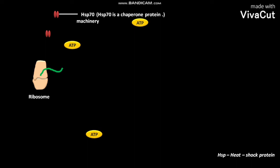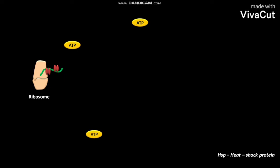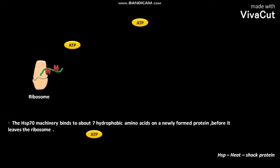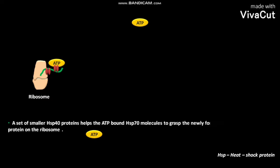The Hsp-70 machinery then binds to the newly formed protein from the ribosome. The Hsp-70 machinery binds to about 7 hydrophobic amino acids on the newly formed protein before it leaves the ribosome. ATP then binds to the bound Hsp-70 machinery, and a set of smaller Hsp-40 proteins helps the ATP-bound Hsp-70 molecules to grasp the newly formed protein on the ribosome.